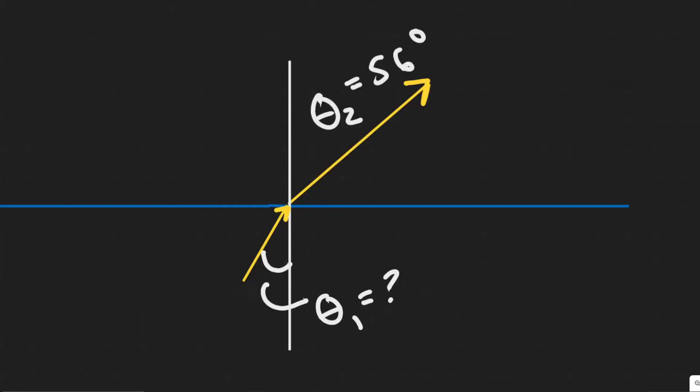In this problem, we're told a light beam coming from an underwater spotlight exits the water at an angle of 56 degrees. At what angle of incidence did it hit the air-water interface from below the surface?